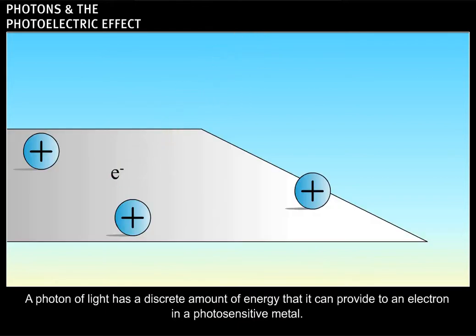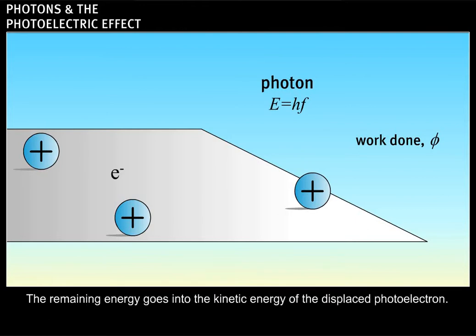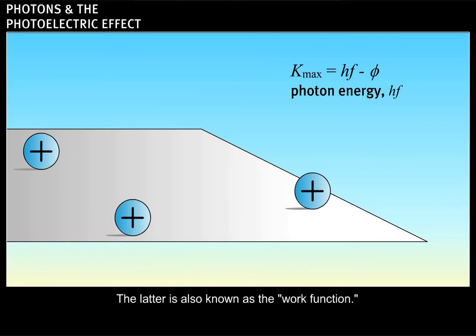A photon of light has a discrete amount of energy that it can provide to an electron in a photosensitive metal. The electron is bound by attractive forces in the material and, as a result, some of the photon's energy does work to free the electron. The remaining energy goes into the kinetic energy of the displaced photoelectron. Thus, the maximum kinetic energy a photoelectron can have is related to the energy of the incident photon and the minimum work required to free the electron. The latter is also known as the work function.